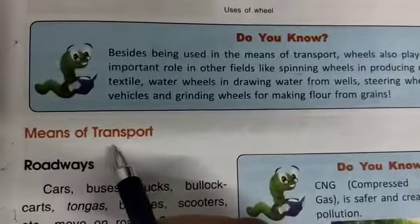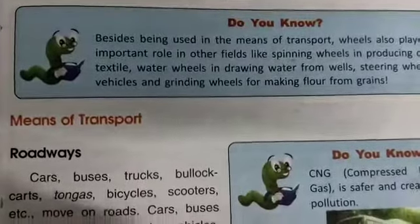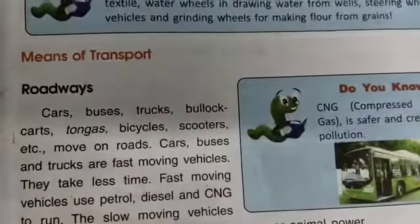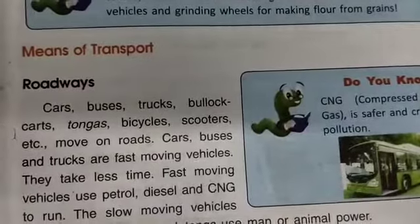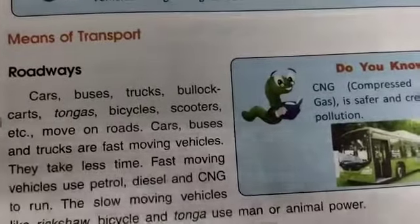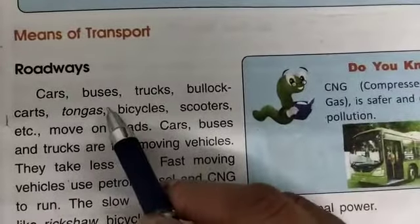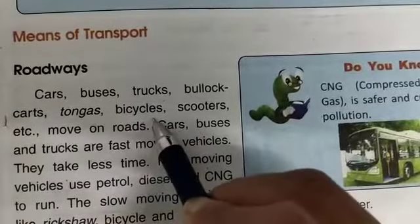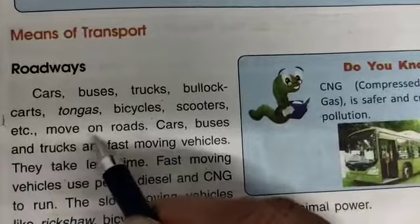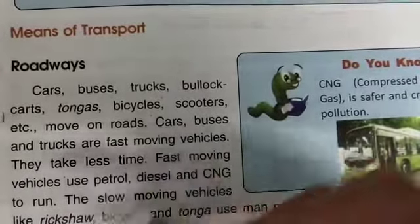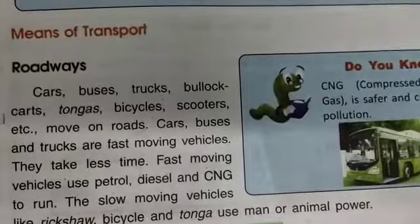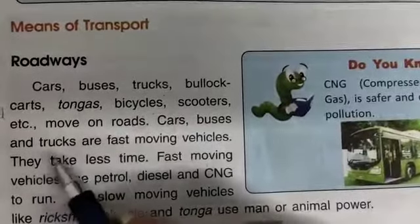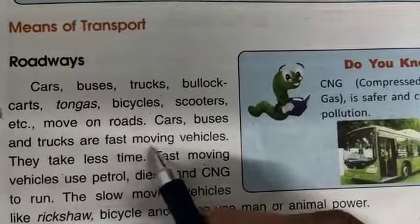Now, means of transport. Under roadways, we have buses, trucks, bullock carts, tangas, bicycles, scooters, and more — all moving on roads. Cars, buses, and trucks are fast-moving vehicles.